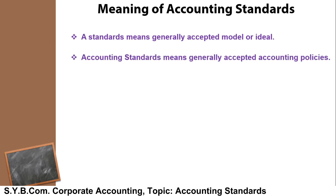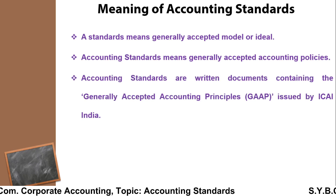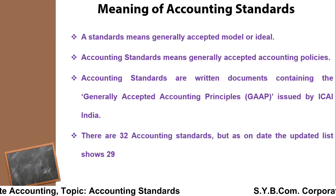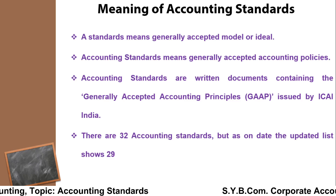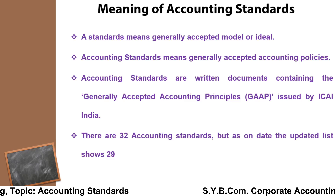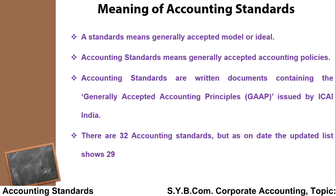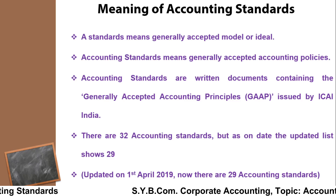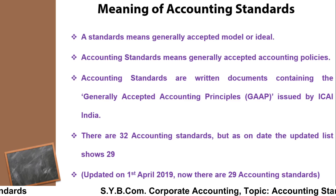The standard means a generally accepted model or ideal. Accounting standards means generally accepted accounting policies given by ICAI, containing the Generally Accepted Accounting Principles, popularly known as GAAP. Basically, there are 32 accounting standards, but the updated list on the ICAI website shows 29, because accounting standard 6 is merged with accounting standard 10, and accounting standard 8 is merged with accounting standard 26. This list is updated up to 1st April 2019, so there are now 29 accounting standards.